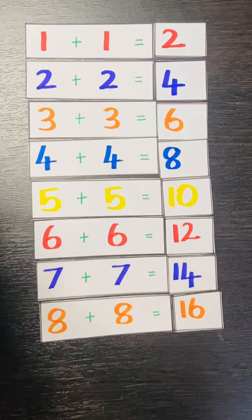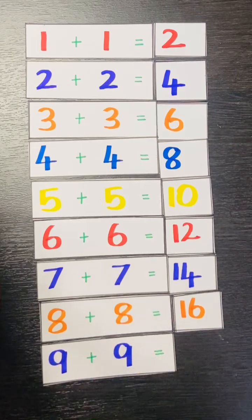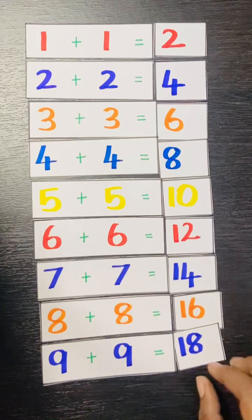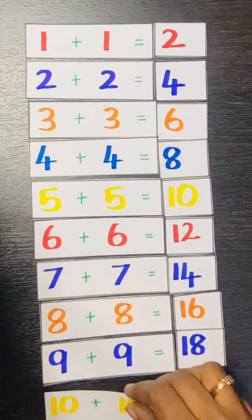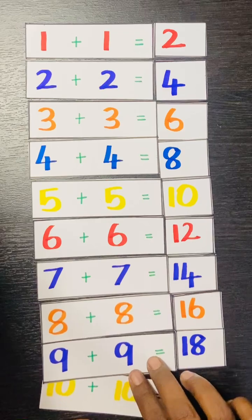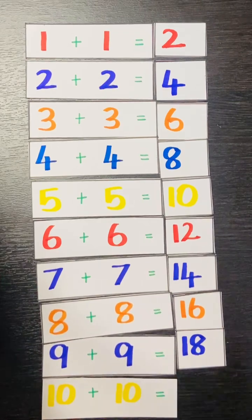9 plus 9. 9 plus 9 is equal to 18. 10 plus 10. 10 plus 10 is equal to 20.